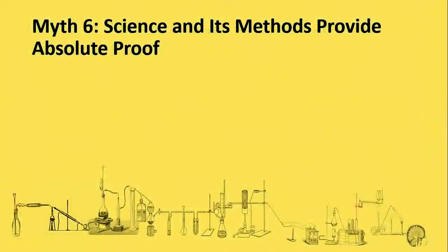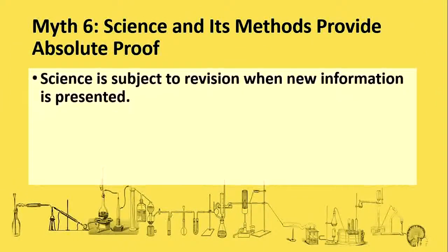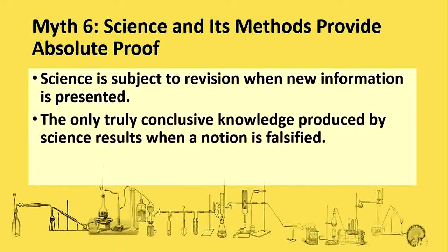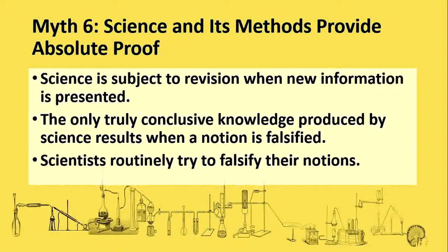The next myth is that science and its methods provide absolute proof. Again, it is a myth. Science is basically subject to revision when new information is presented. You recall the periodic table — as soon as new elements are discovered, the periodic table is being revised periodically. The only truly conclusive knowledge produced by science results when a notion is falsified. You should explain to your students that scientists routinely try to falsify their notions.